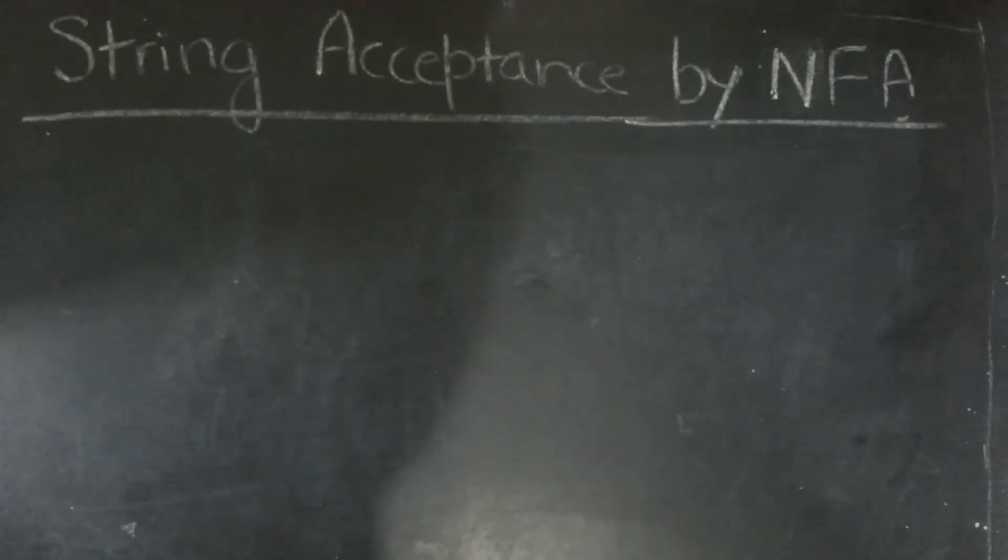Hi everyone, today we will see how a string is accepted by a non-deterministic finite automata. So in non-deterministic finite automata, we know that there are more than one transition for same input symbol.